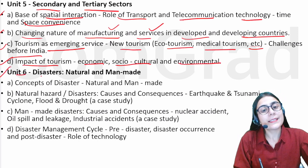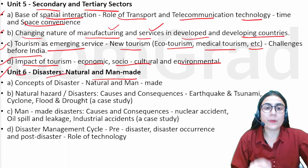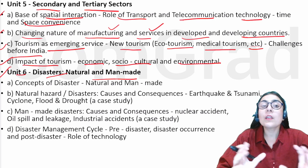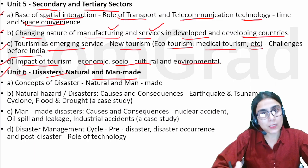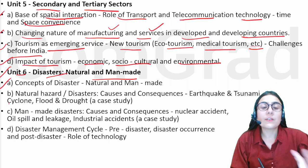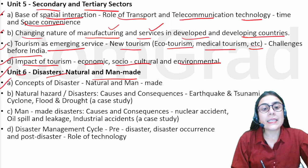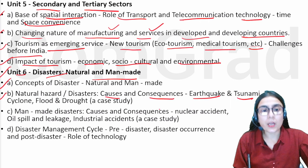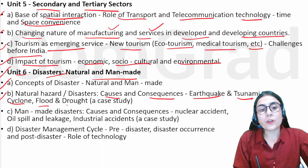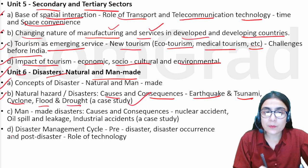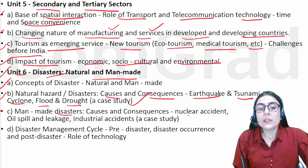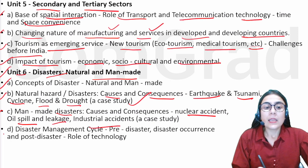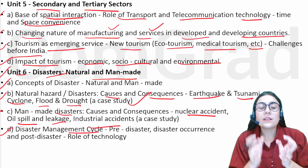The sixth unit is disaster — natural and man-made. Disasters are of two types: natural, which are natural activities, and man-made, which are caused by humans. We will study the concept of disaster, natural disaster causes and consequences — like earthquake, tsunami, cyclone, flood, drought. Man-made disasters include nuclear accident, oil spill and decay, industrial accident, and disaster management.